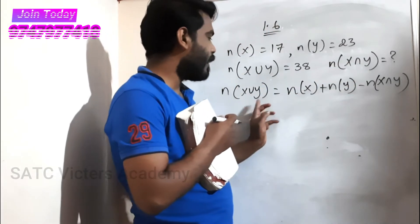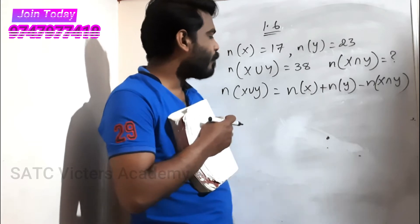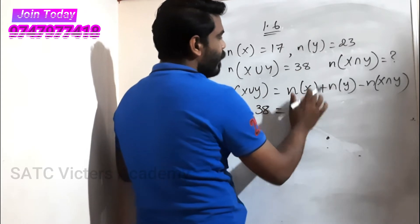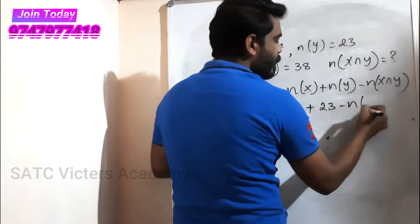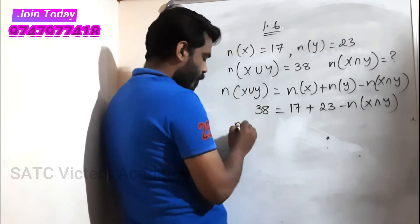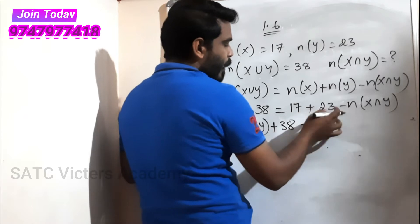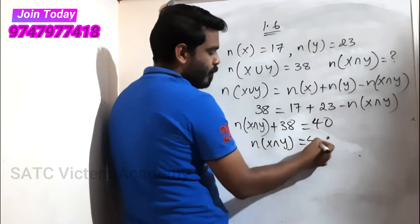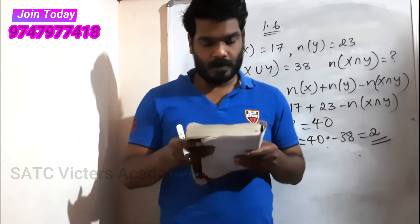The formula is: n(A∪B) = n(A) + n(B) - n(A∩B). Applying it here: n(X∪Y) = 38, n(X) = 17, n(Y) = 23. So n(X∩Y) = 17 + 23 - 38 = 40 - 38 = 2. Therefore n(X∩Y) is equal to 2.